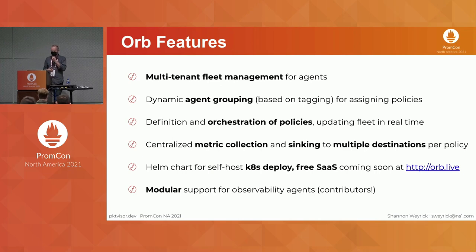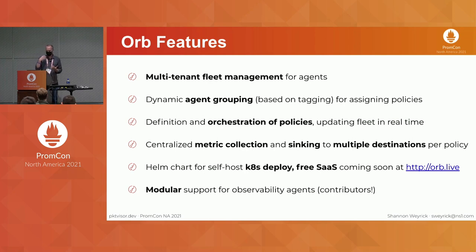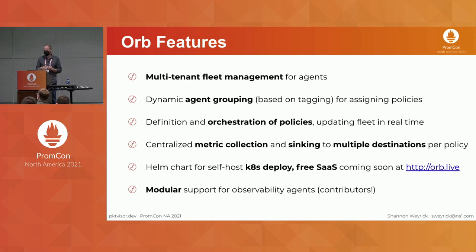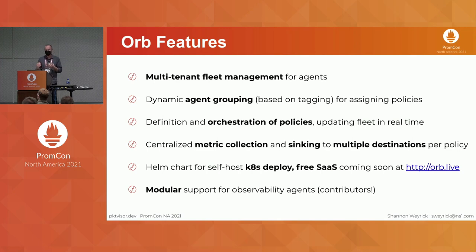Orb itself is a multi-tenant system. It allows fleet management — understanding what agents are collecting, organizing them, grouping them with a tagging system. That lets you address agents and send them policies, organize policies, send them out in real time, understand which policies are running on which agents, collect the information back, and send it to your time series sinks. It can be deployed via a Helm chart to Kubernetes where you run the control plane yourself, and we also plan on having a free SaaS option. Packetvisor is essentially a module for Orb, and we might run other types of observability agents inside the Orb agent in the future.